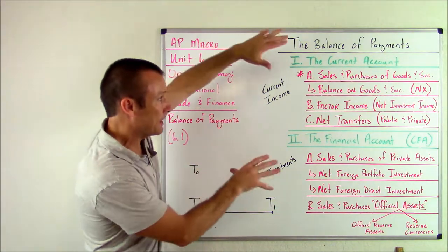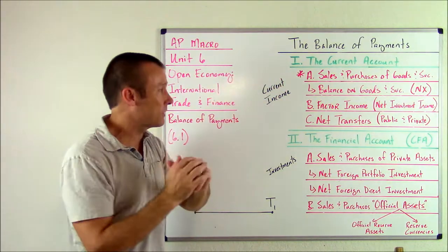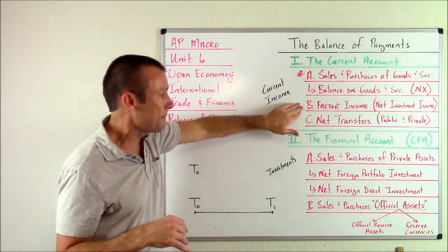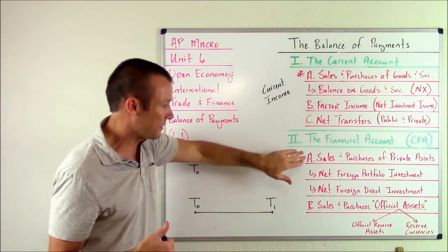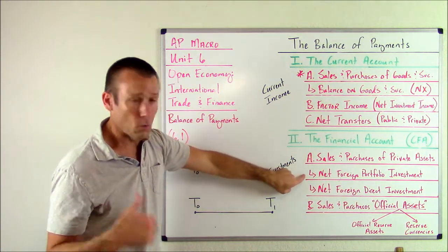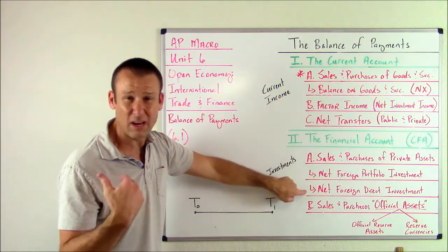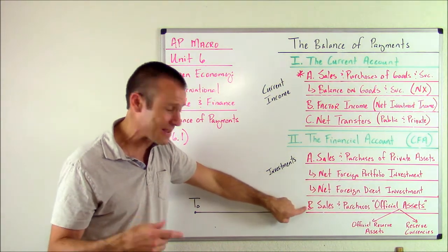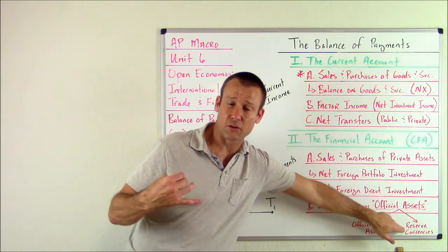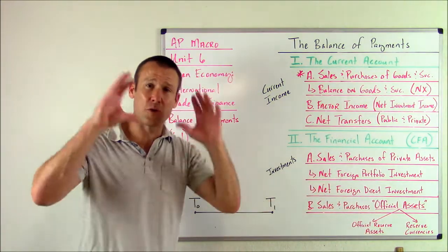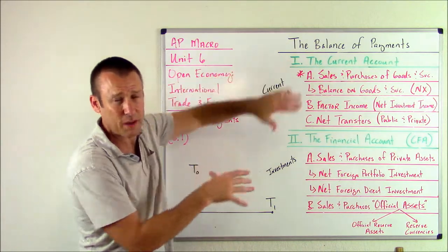That's the big picture. The current account records current income: goods and services, past investments yielding interest and dividends, or somebody just transferring money. The financial account records net foreign portfolio investment — stocks and bonds — multinational direct investment, and central bank activity buying and selling reserve currencies. Those are the major things recorded in the balance of payments.